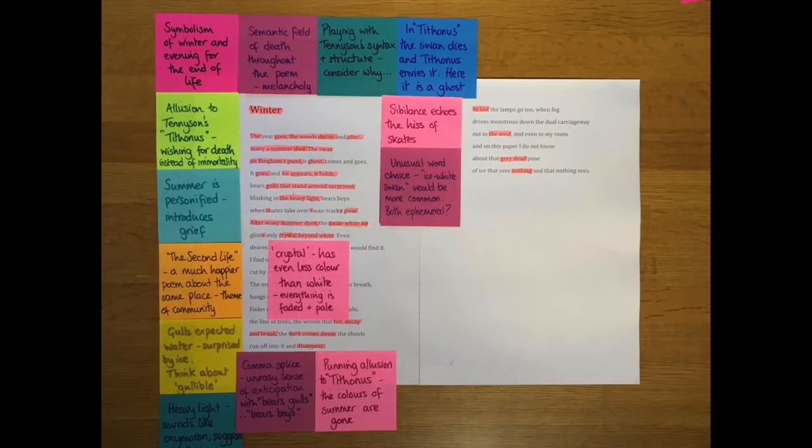And then he talks about the ice on the top of the pond being crystal beyond white. And I think the explanation for that is that crystal, because it's colorless, has even less color than white. So everything, even the ice, is kind of faded and pale and colorless. And it adds to this melancholy atmosphere.